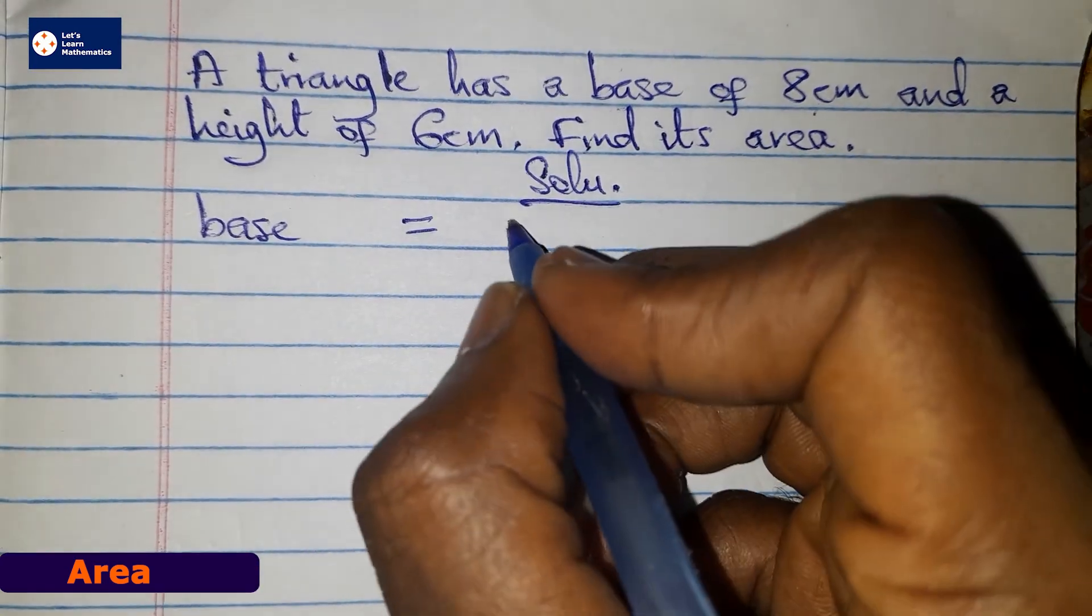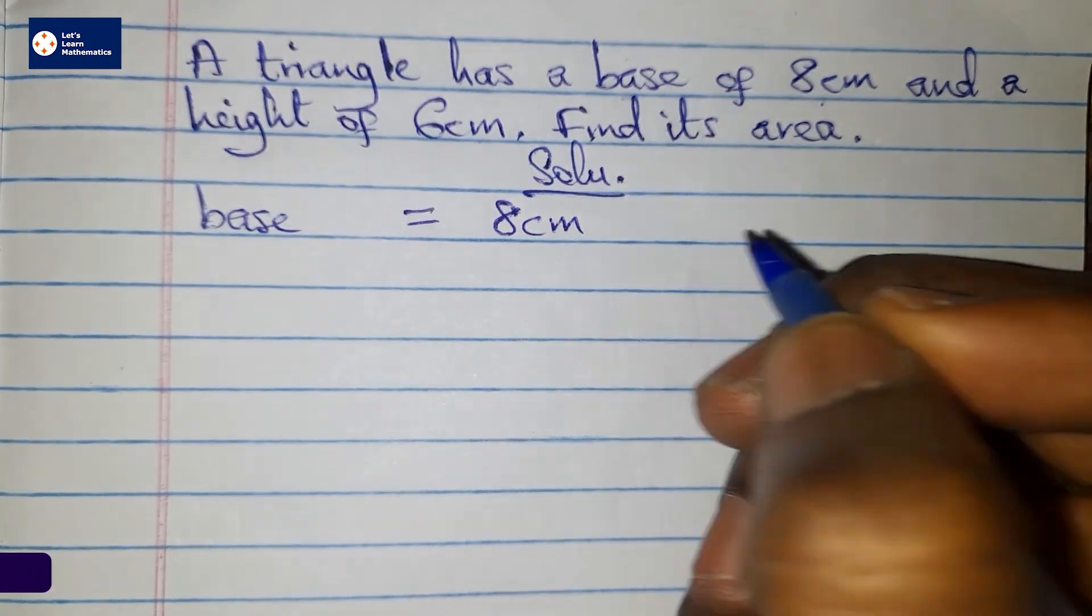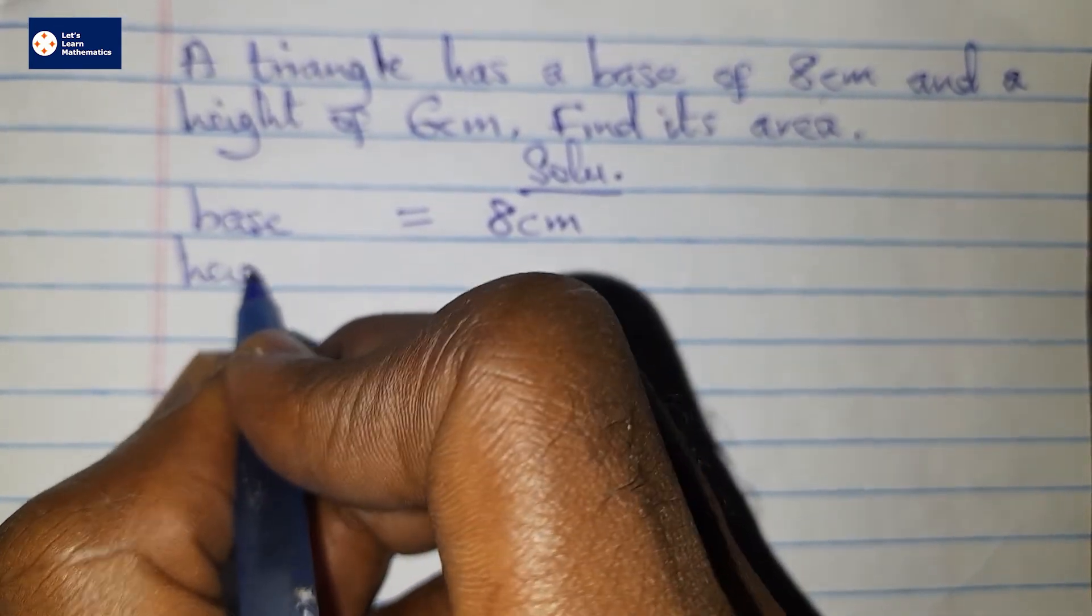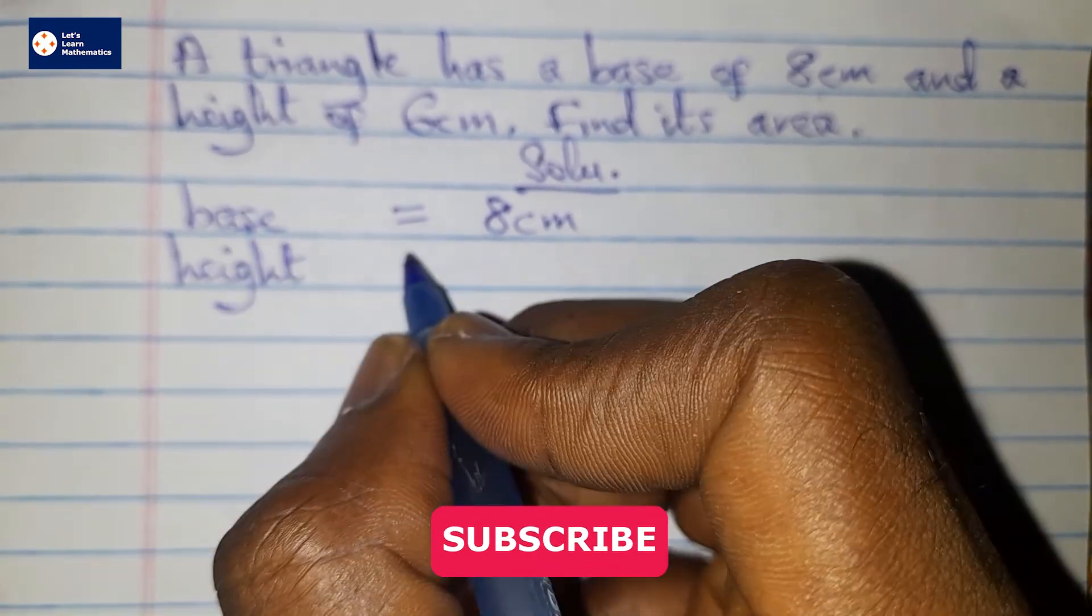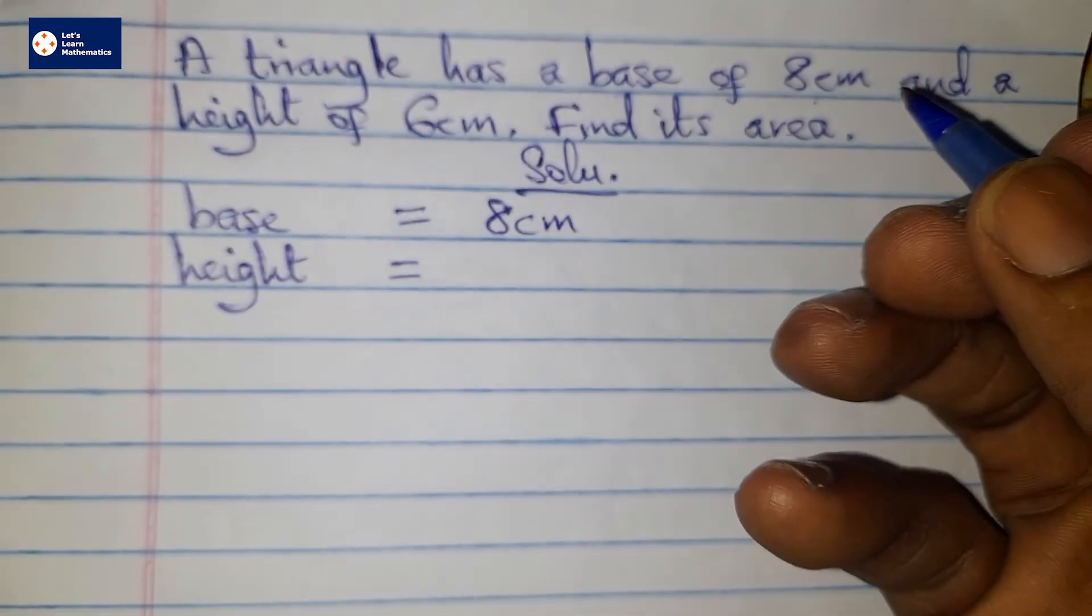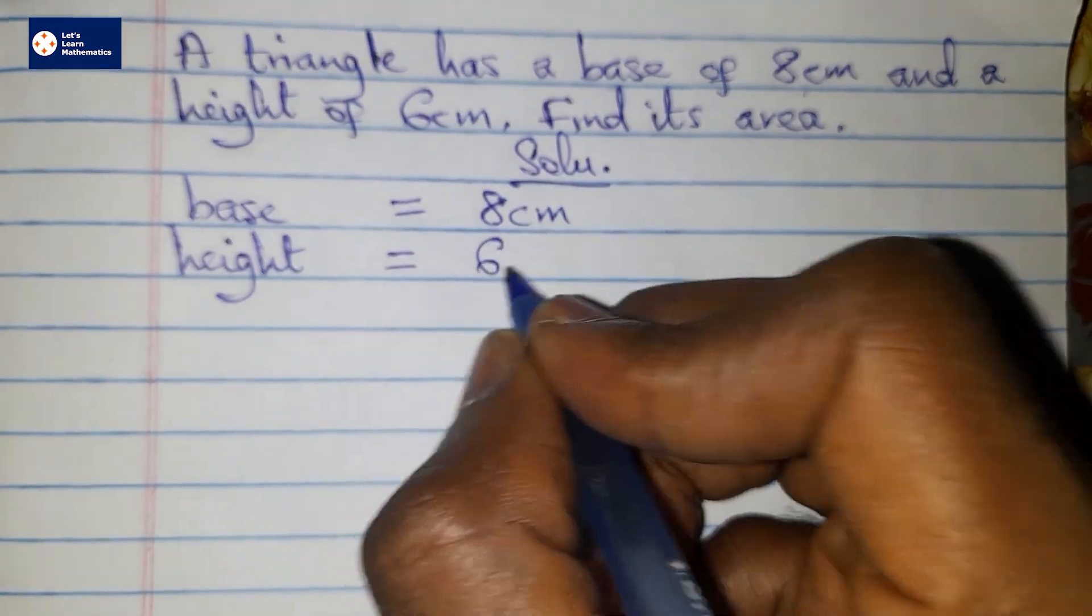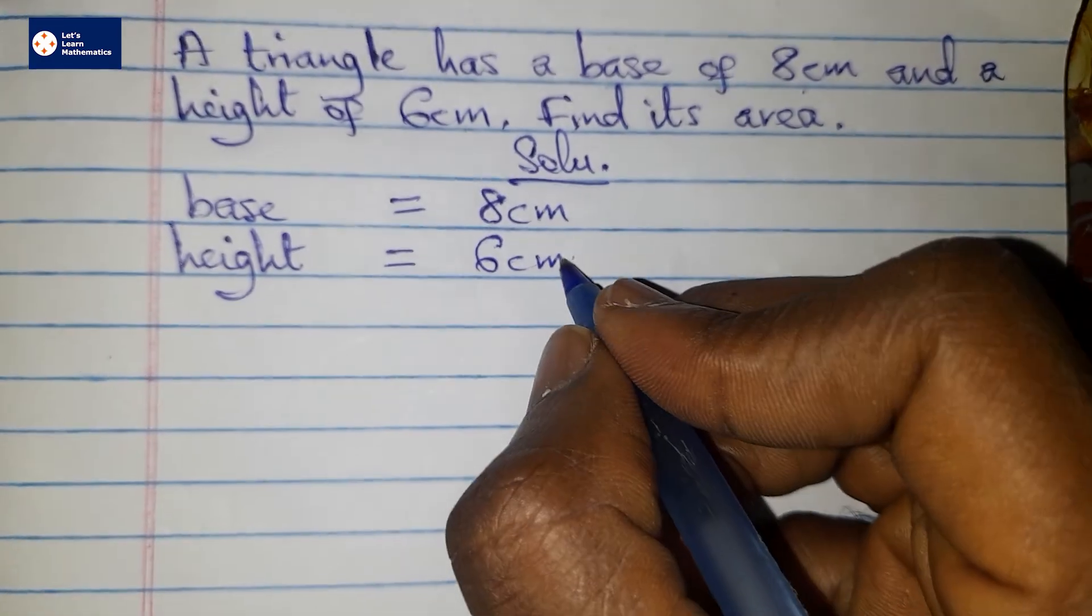So the base in the question they said is 8 centimeters, so we write that first. Then the height is 6 centimeters. You do this to make the question easier; it also makes it presentable.